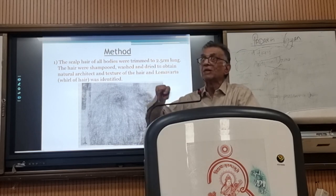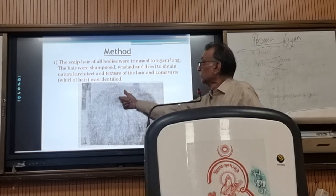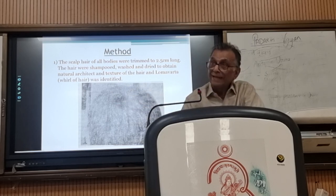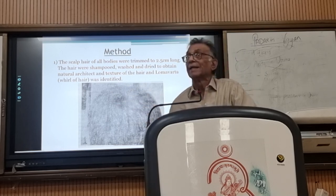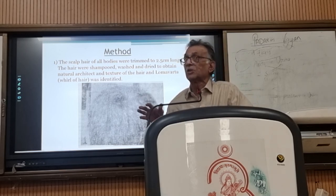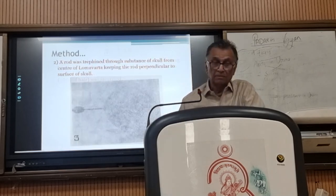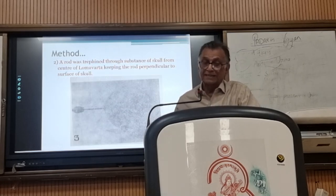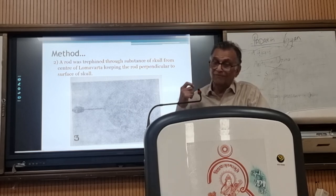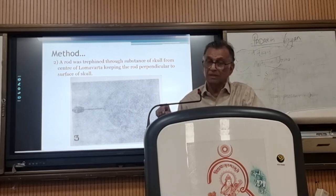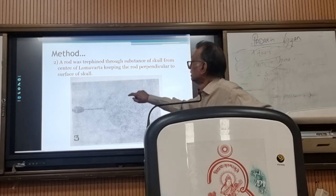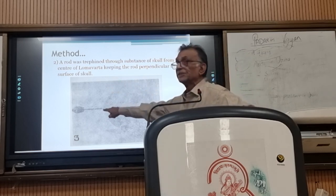The scalp hair of all bodies were trimmed to 2.5 centimeters long, the hair were shampooed, washed and dried to obtain the natural architecture and texture of the hair and Lomavartha — the whorl of hair. Lomavartha is laid down in Ayurvedic books. I found out the whorl formation, which is being seen here, searching out Lomavartha on the top of the head. I took a rod, refined through the substance of the skull from the center of the Lomavartha, and pierced there, as seen here.